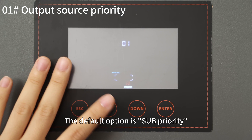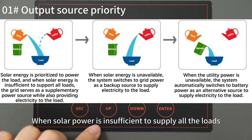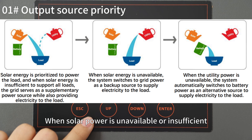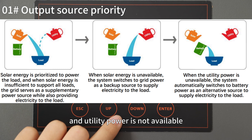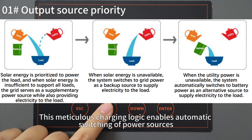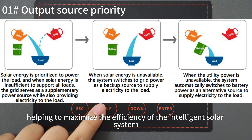The default option is SUV priority, which means that solar power is the first priority to supply power to the load. When solar power is sufficient to supply all the load, utility power is used as a supplementary power source. When solar power is unavailable or insufficient and utility power is not available, battery power is used to supply power to the load. This charging logic enables automatic switching of power sources, providing a user-friendly priority order that maximizes the efficiency of the intelligent solar system.